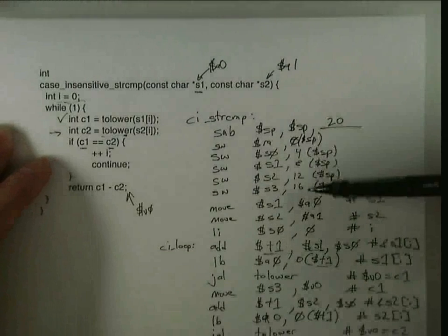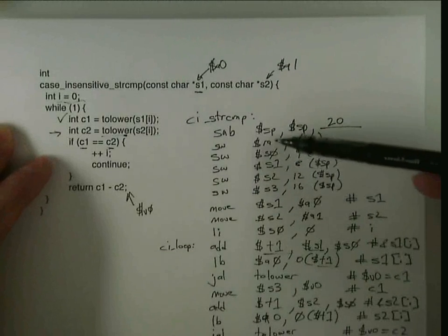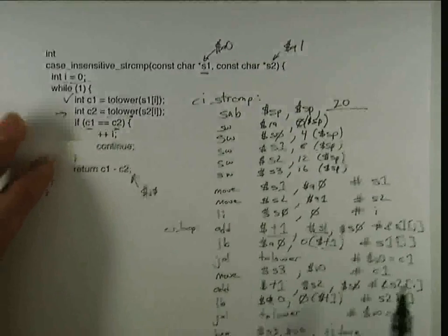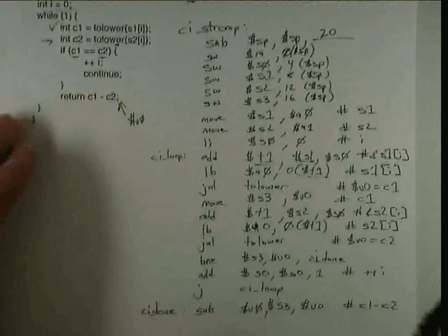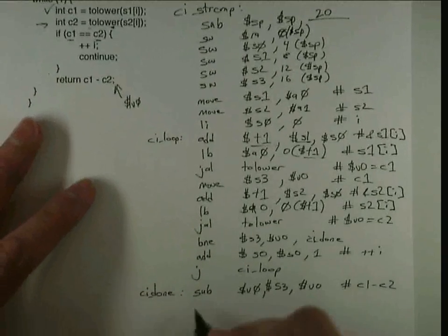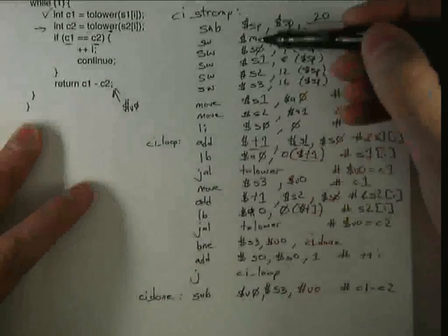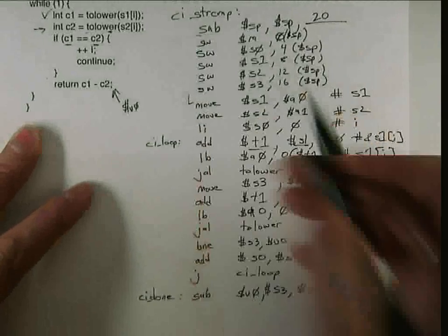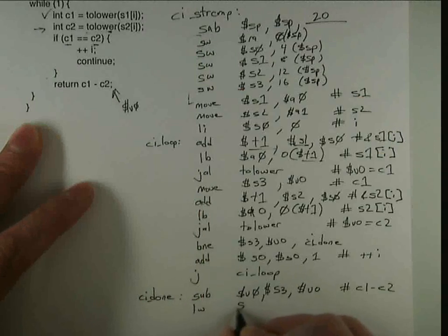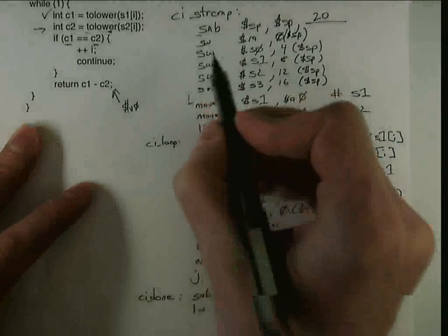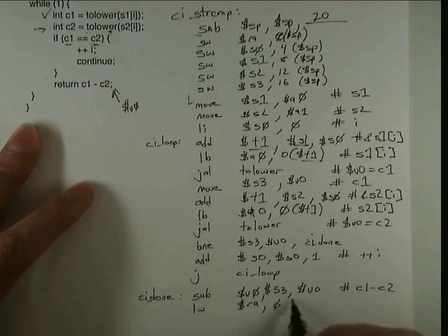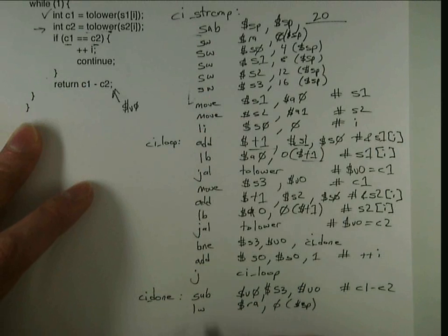But unlike the caller saved registers, I need to restore all of the callee saved registers back to what value they had before this call, because the function that called me might have put some useful value in there. And so what I'm going to do is basically the exact opposite of this whole block of code. And so for everywhere there's a store word, I'm going to do a load word, but everything else is the same. So I'm going to load the RA back in.